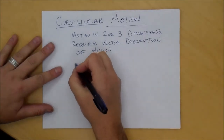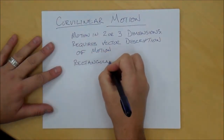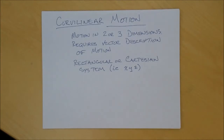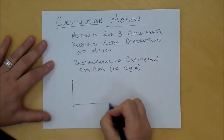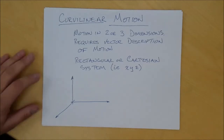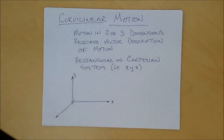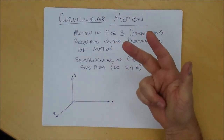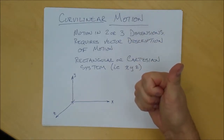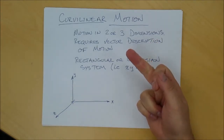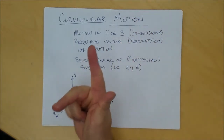We need to choose a coordinate system, and we'll begin with the Cartesian or rectangular coordinate system, XYZ. When we pick the coordinate system, it's important that we stick to the right-hand rule convention. The right-hand rule says if we choose X to point this way and Y to point that way, then Z must be consistent. Using our right hand, the thumb points along the X axis, the index finger along Y, and the middle finger along Z.